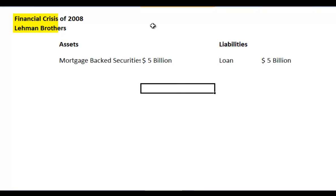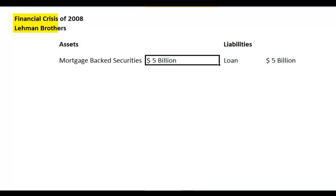There's nothing wrong with that — companies do this all the time. Domino's will take a loan for five crores and invest it in opening restaurants. In this case, Lehman Brothers expected that the five billion dollars in assets would grow to ten, fifteen, or twenty billion, and then they could sell the assets, make a profit, pay back the loan, and still net seven or eight billion dollars.